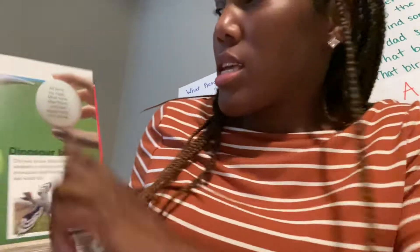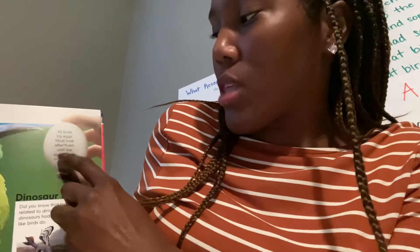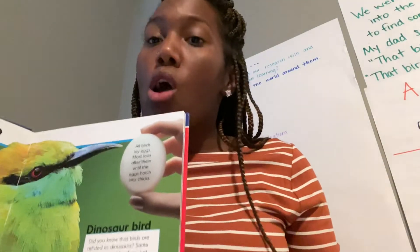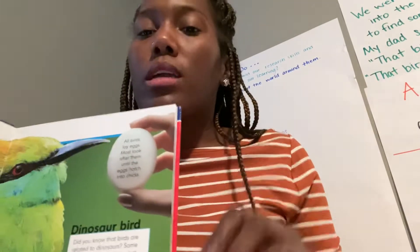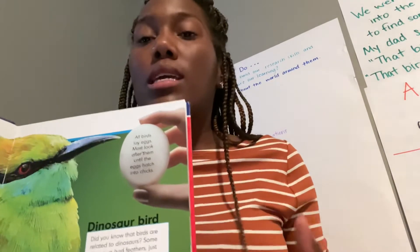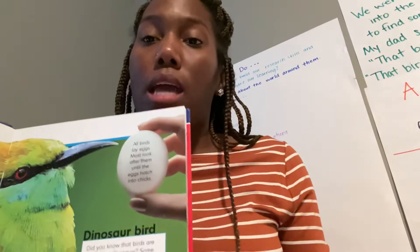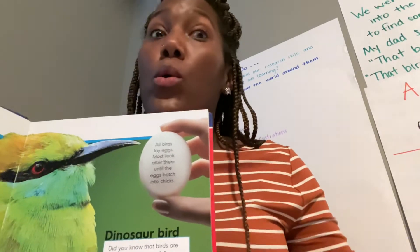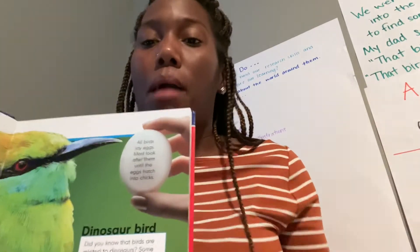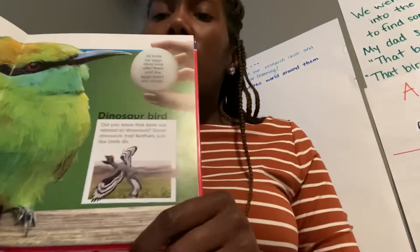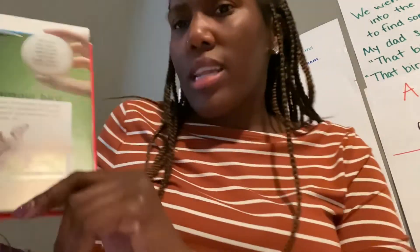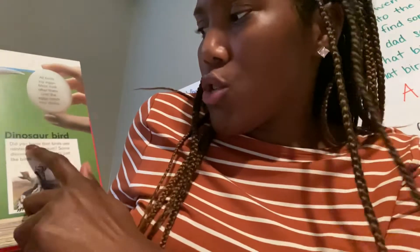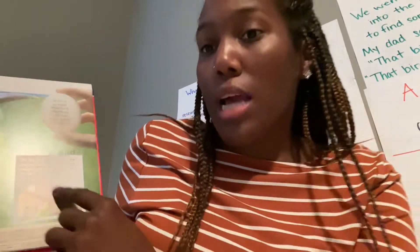Here on page five, it says: all birds lay eggs. Most look after them until the eggs hatch. There's another tricky sentence — all birds lay eggs, but most look after them until they hatch. That's telling us not all birds look after their eggs; some leave them to grow and develop or let whatever nature is going to have happen to them happen. Did you know that birds are related to dinosaurs? Some dinosaurs have feathers just like birds do.